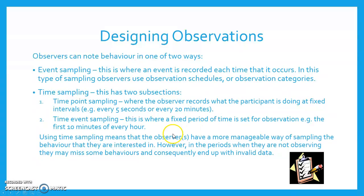Using time sampling means that observers have a more manageable way of sampling the behavior that they are interested in. However, in the periods when they are not observing, they may miss some behaviors and consequently end up with invalid data.